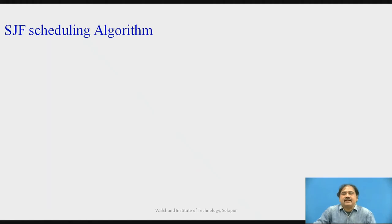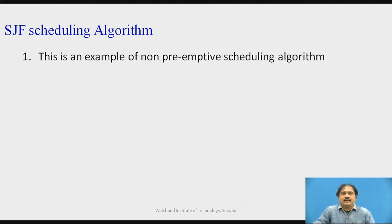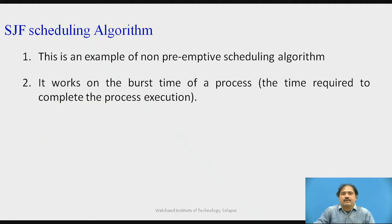SJF stands for Shortest Job First, and this is an example of a non-preemptive scheduling algorithm. It means that once a process goes inside the CPU for execution, we cannot stop that execution in between. The main principle is that it considers the burst time of a process to decide who will go first in the CPU. The process with the smaller burst time is selected first. Burst time is the time required to execute the process completely in the CPU.